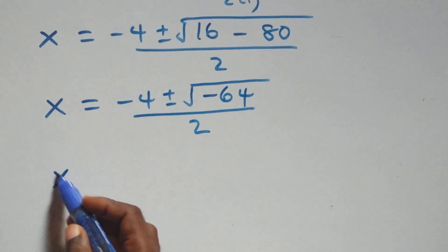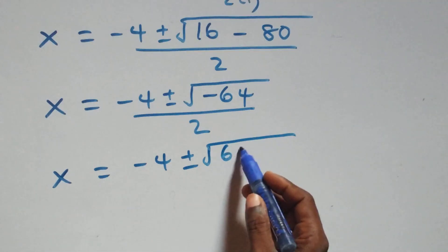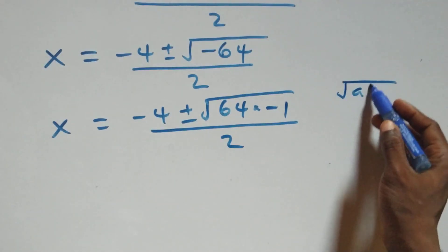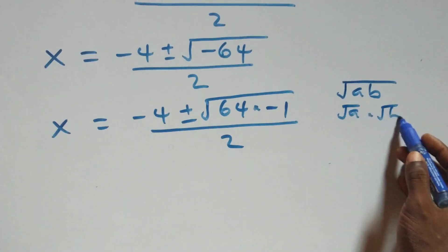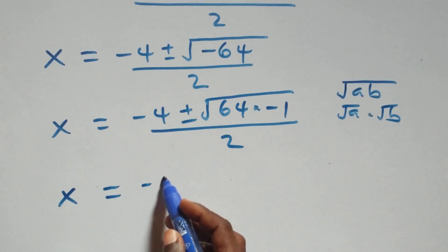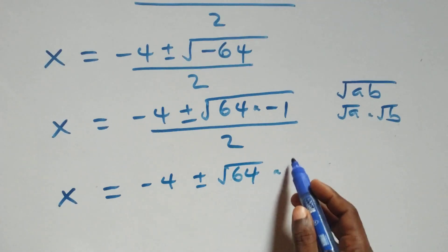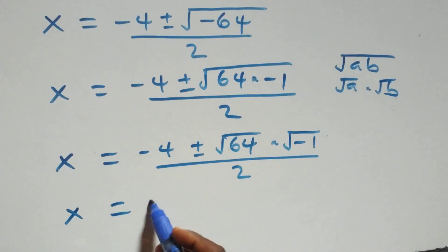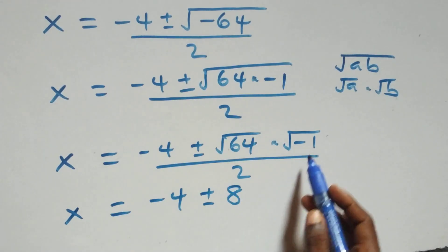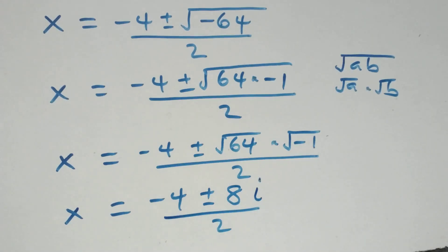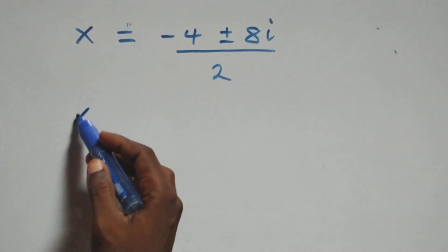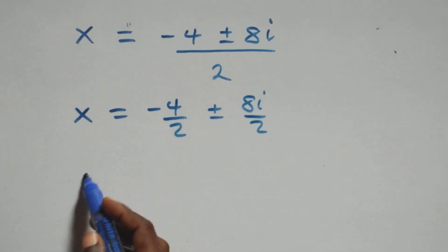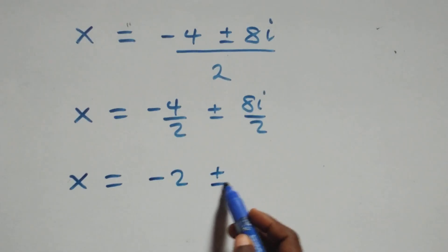We can write this as x equals to minus 4 plus or minus square root of (64 times minus 1) over 2. Using the property that root(a times b) = root(a) times root(b), this becomes minus 4 plus or minus square root of 64 times root of minus 1, over 2. Since root of minus 1 is i, we get x equals to minus 4 over 2 plus or minus 8i over 2, which gives minus 2 plus or minus 4i.